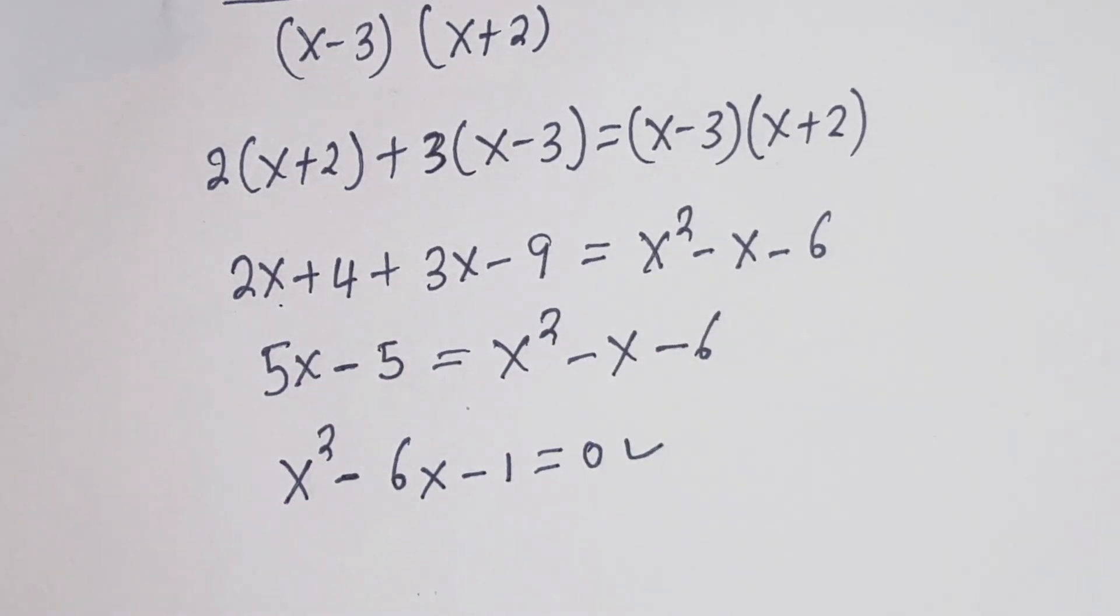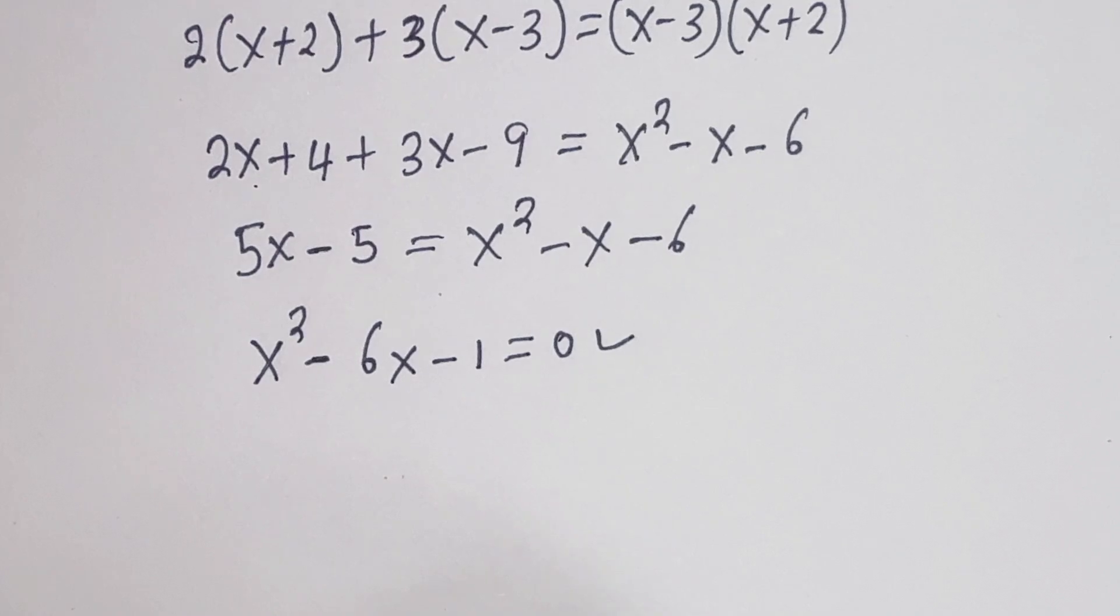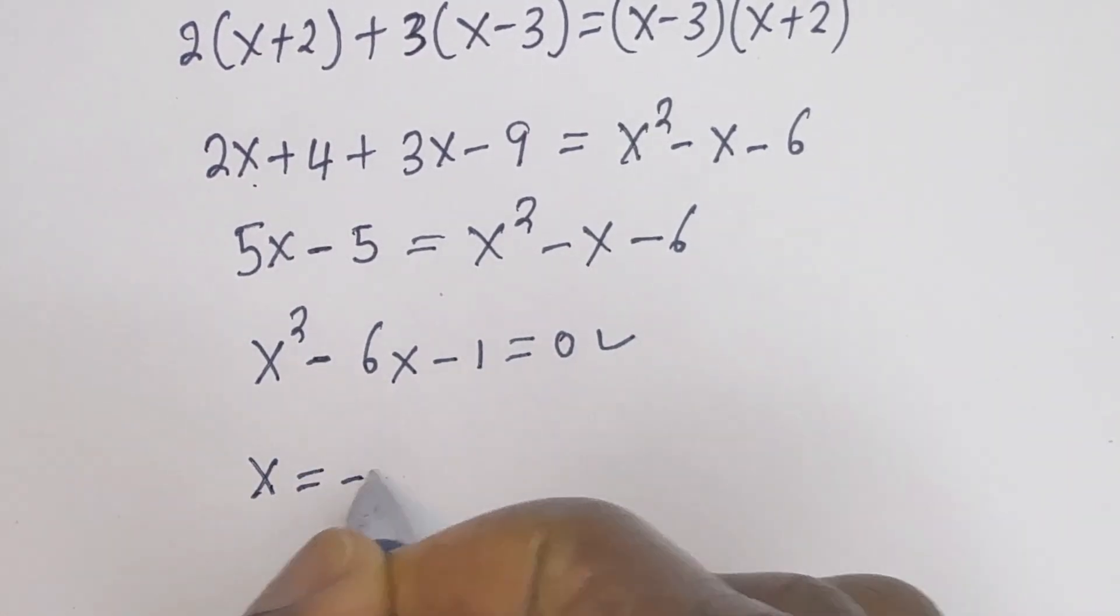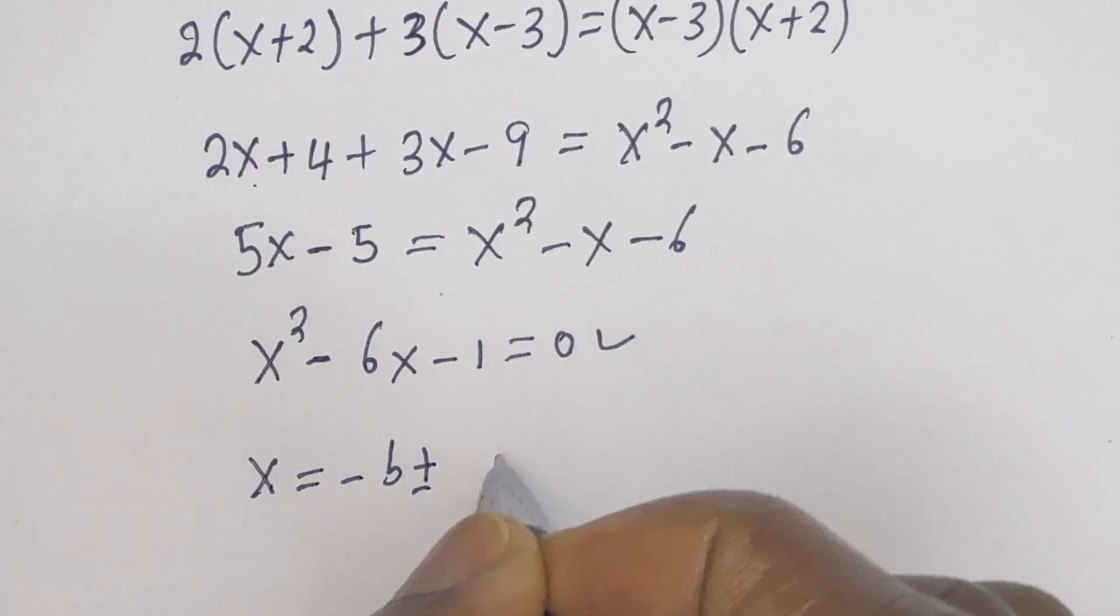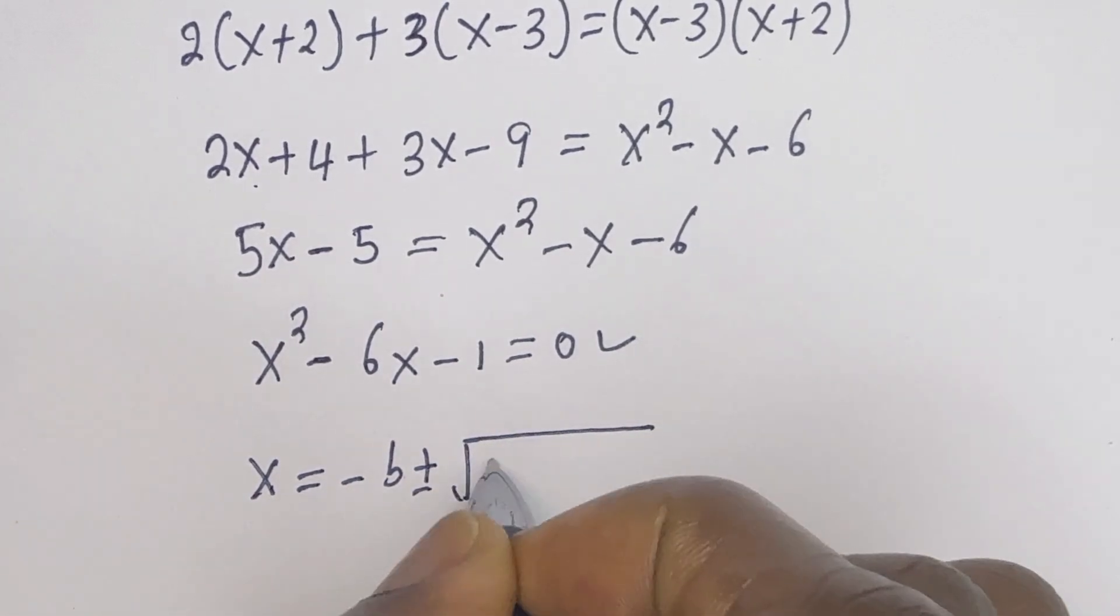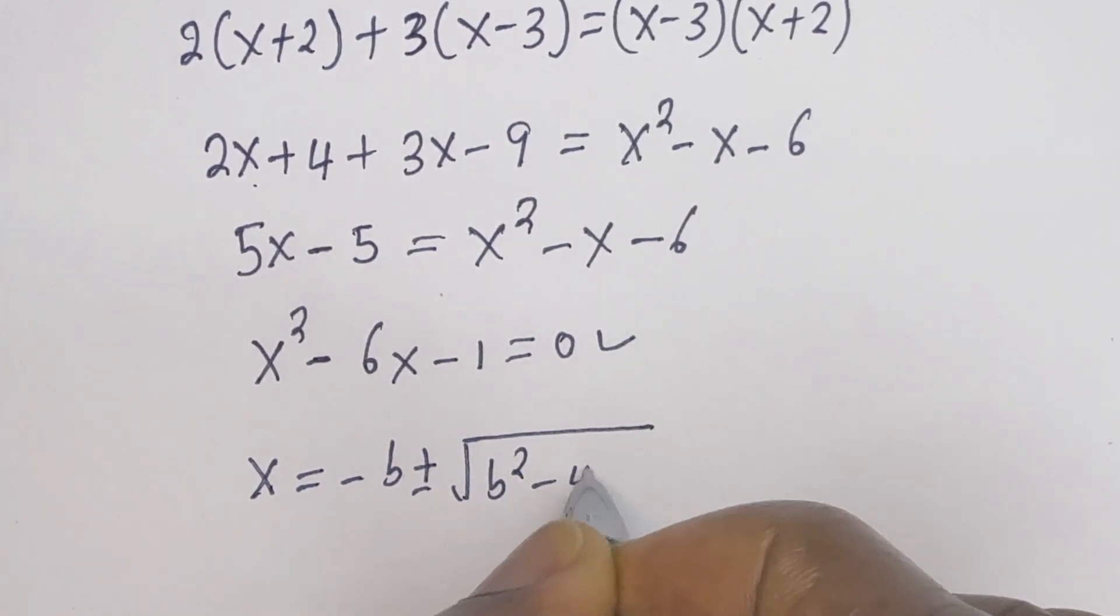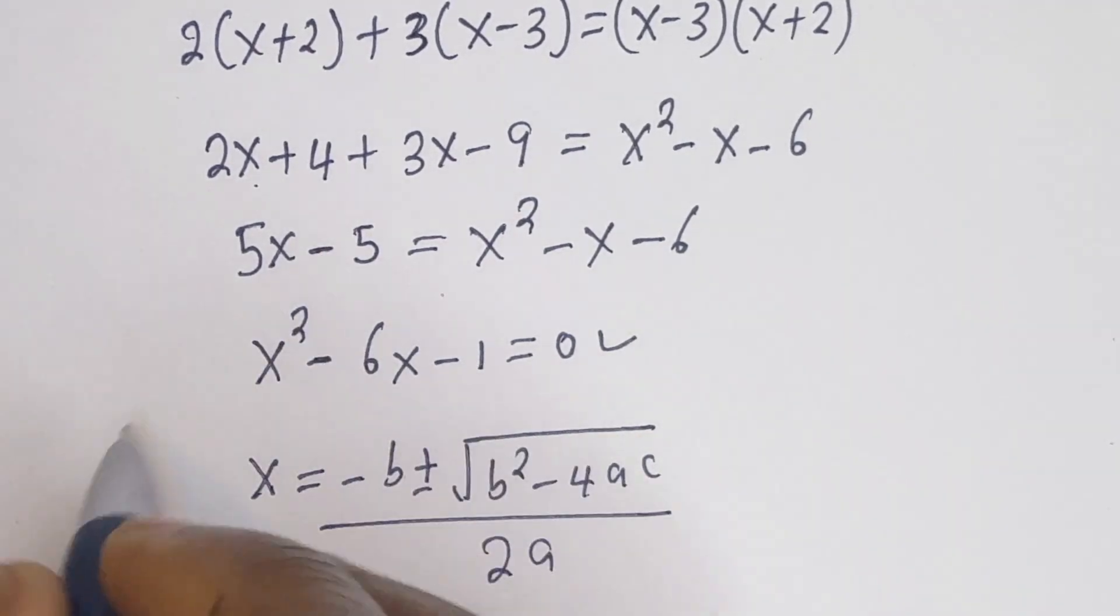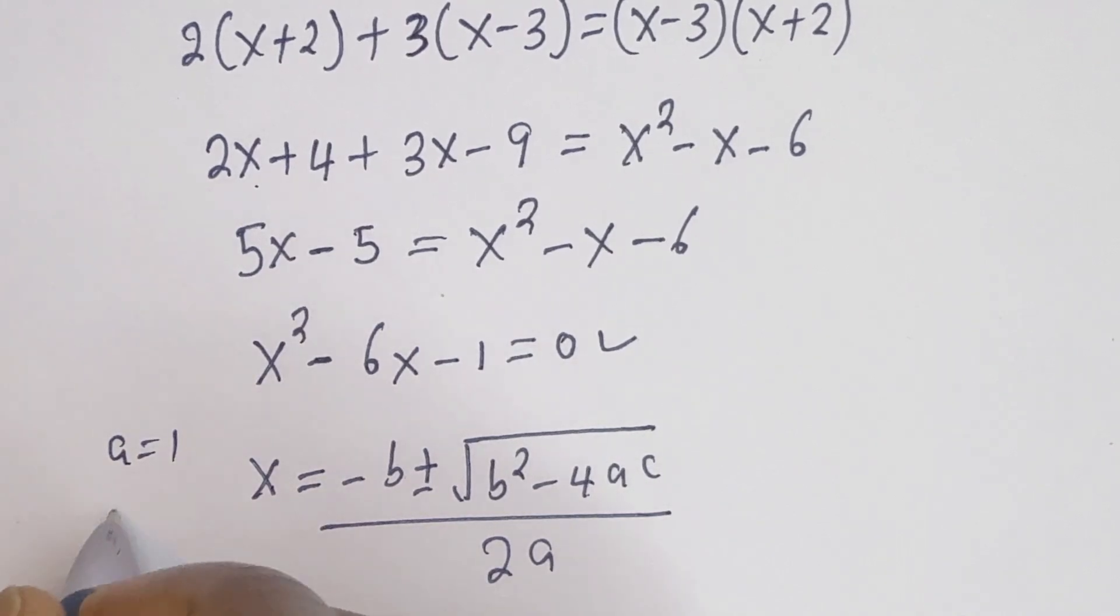This is a quadratic equation which can be solved using quadratic general formula. Our quadratic general formula is given as x is equal to minus b plus or minus square root of b squared minus 4ac divided by 2a. Then, from this equation, a equal to 1, b equal to minus 6, c equal to minus 1.